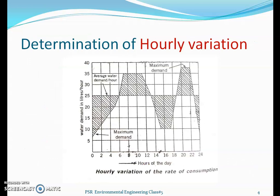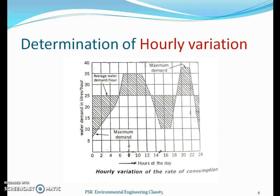For determination of hourly variations, observe the graph showing water demand in liters per hour on an hourly basis from 0 to 24 hours. The average is 25 liters per hour. During 6 to 12 o'clock, demand goes up to 35 liters or more. During night time — around 18 to 22 hours — when industries work night shifts, maximum demand reaches about 40 to 45 liters per hour.